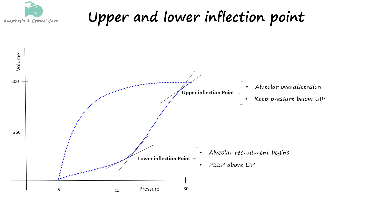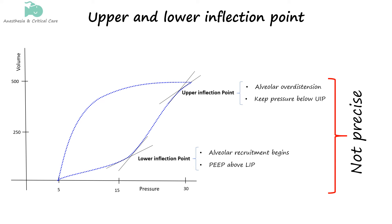While the inflection points are useful for getting an idea of lung recruitment and over-distension, they are not precise and are difficult to measure.